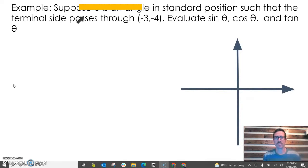It says suppose an angle is in standard position such that the terminal side passes through the point (-3, -4). Given that angle theta, evaluate sine, cosine, and tangent.